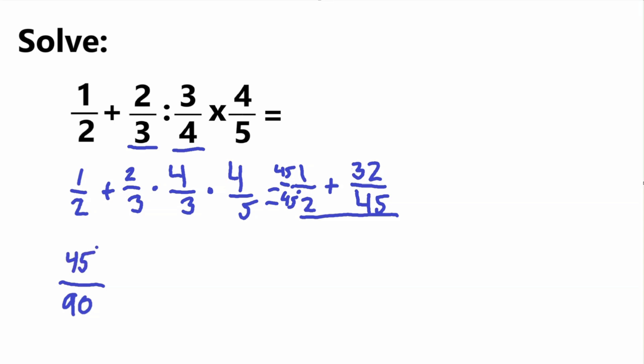And now plus, so getting from 45 to 90, you multiply by 2, so we multiply bottom and top by 2. So you have 32 times 2, and that is equal to 64 over 90.